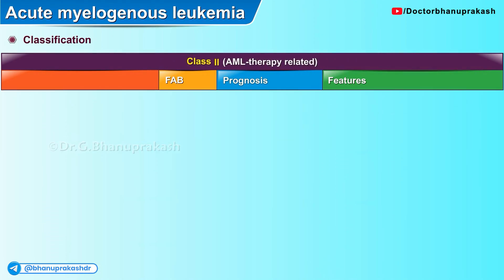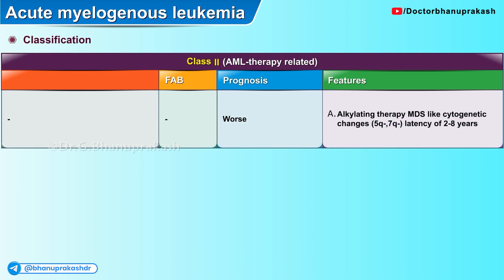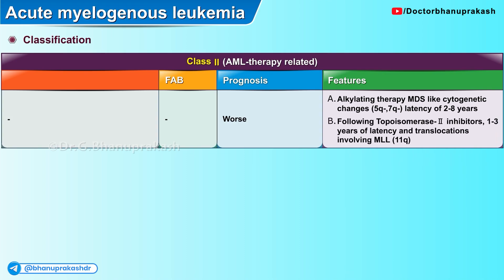Class 2 of the WHO is therapy-related acute myelogenous leukemia. These tend to have worse prognosis and can be due to alkylating therapy or following topoisomerase type 2 inhibitors. In alkylating therapy, myelodysplastic syndrome-like cytogenetic changes with a latency of about 2 to 8 years is a common feature. AML following topoisomerase type 2 inhibitors results after 1 to 3 years of latency and involves translocations in the long arm of chromosome 11, resulting in MLL rearrangement.